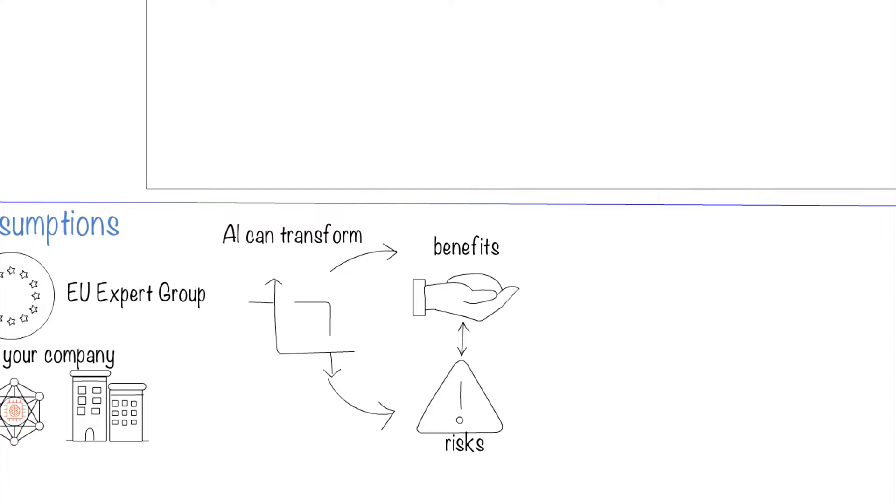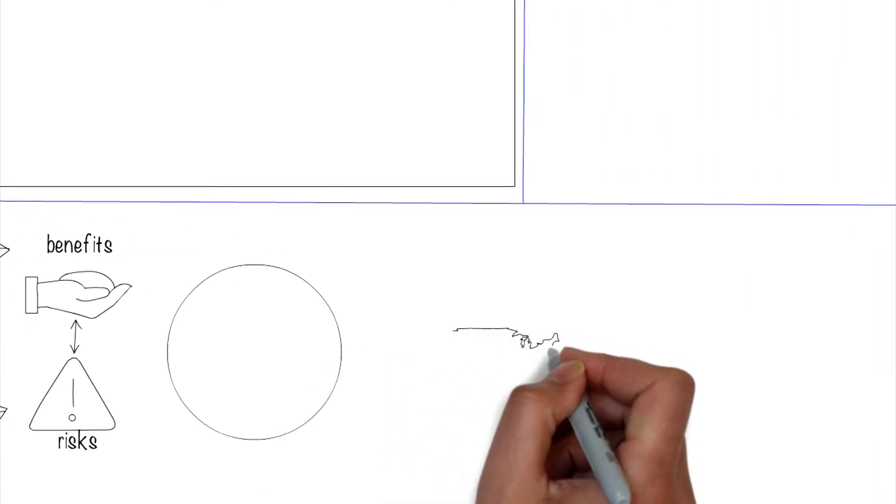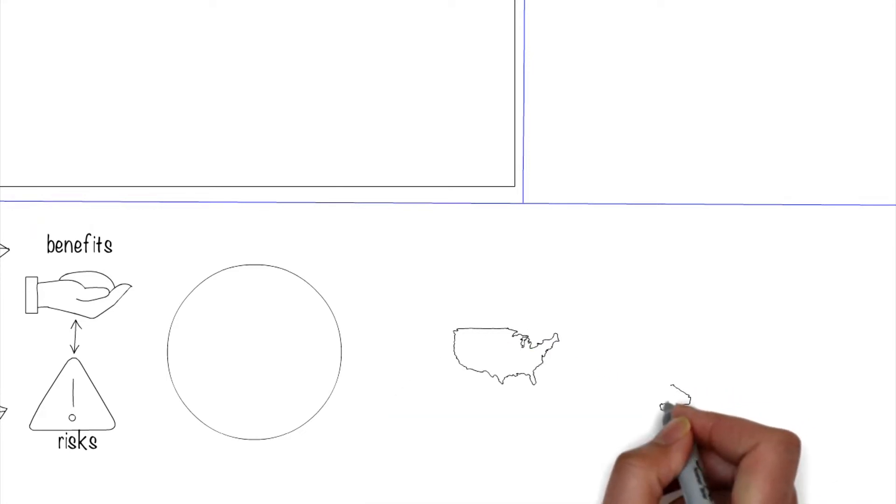For an AI system to be trustworthy, it has to be legal, ethical, and robust. Legal means that it has to obey the local laws. I'm intentionally being fuzzy here because this could get really complex really quickly.